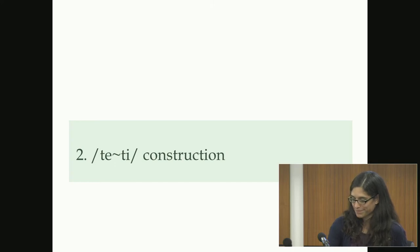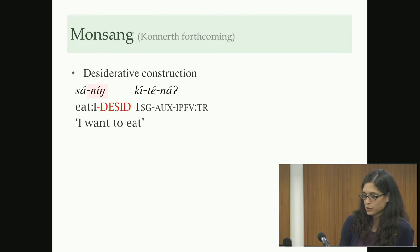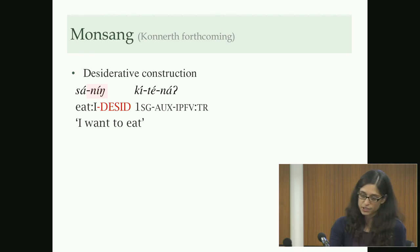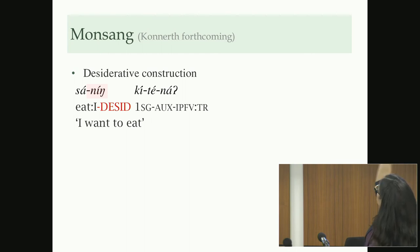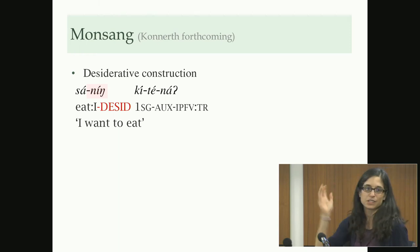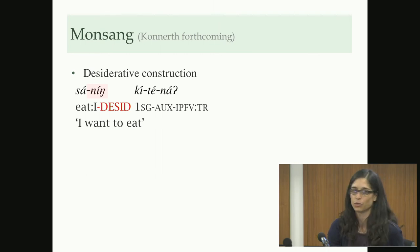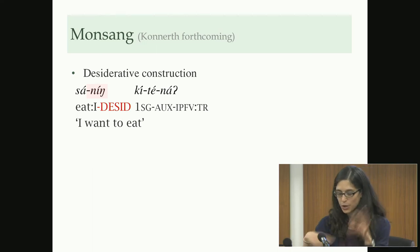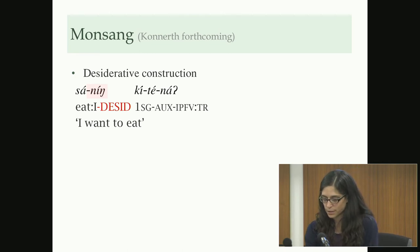Now, T or Te constructions. The desiderative construction originates in a reported intentionality construction based on reported speech. But nowadays, if you sit down with a native speaker and show them this construction, they just say 'ning' means 'want' and 'te' is just an auxiliary — they don't recognize it as meaning 'to say' or as reported speech anymore. It's all fused and opaque for native speakers.